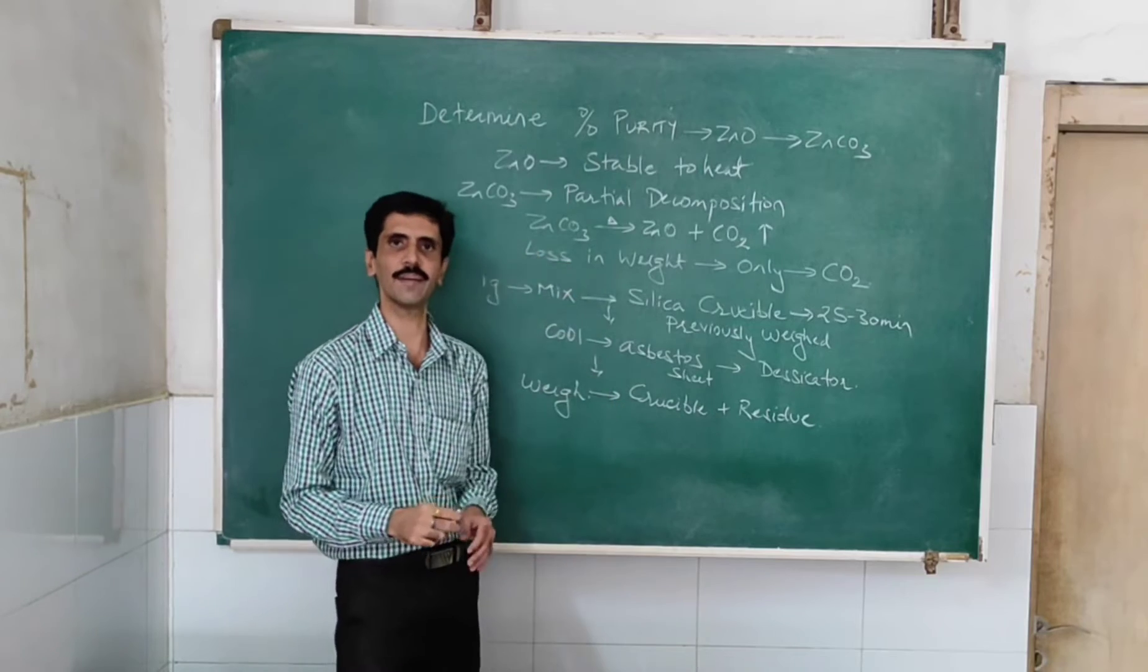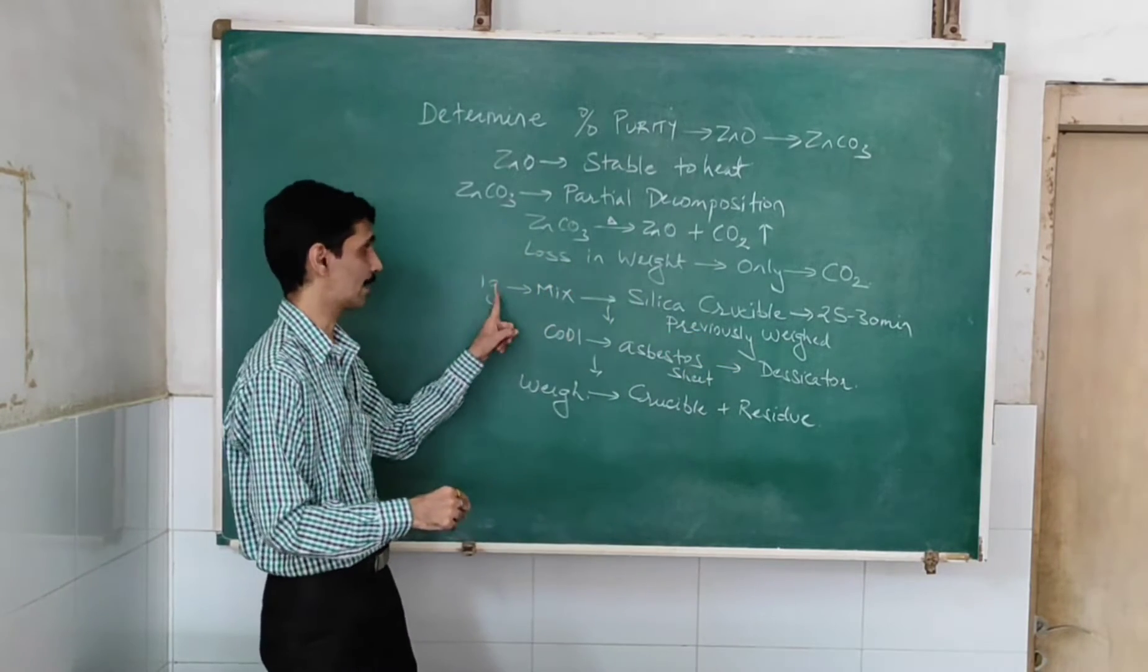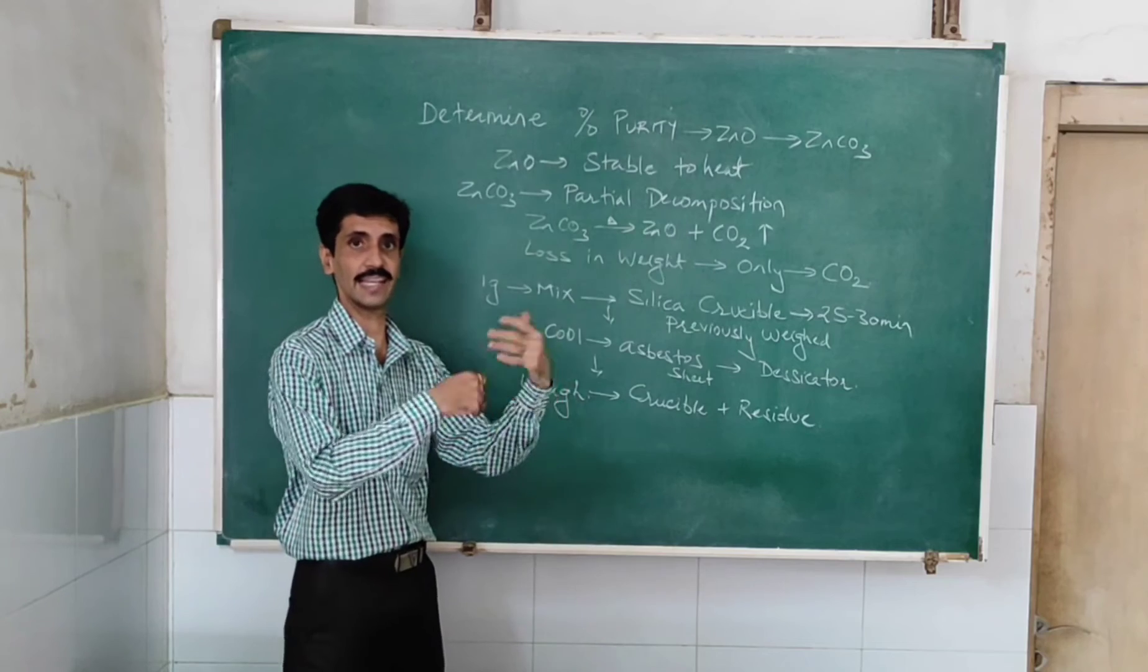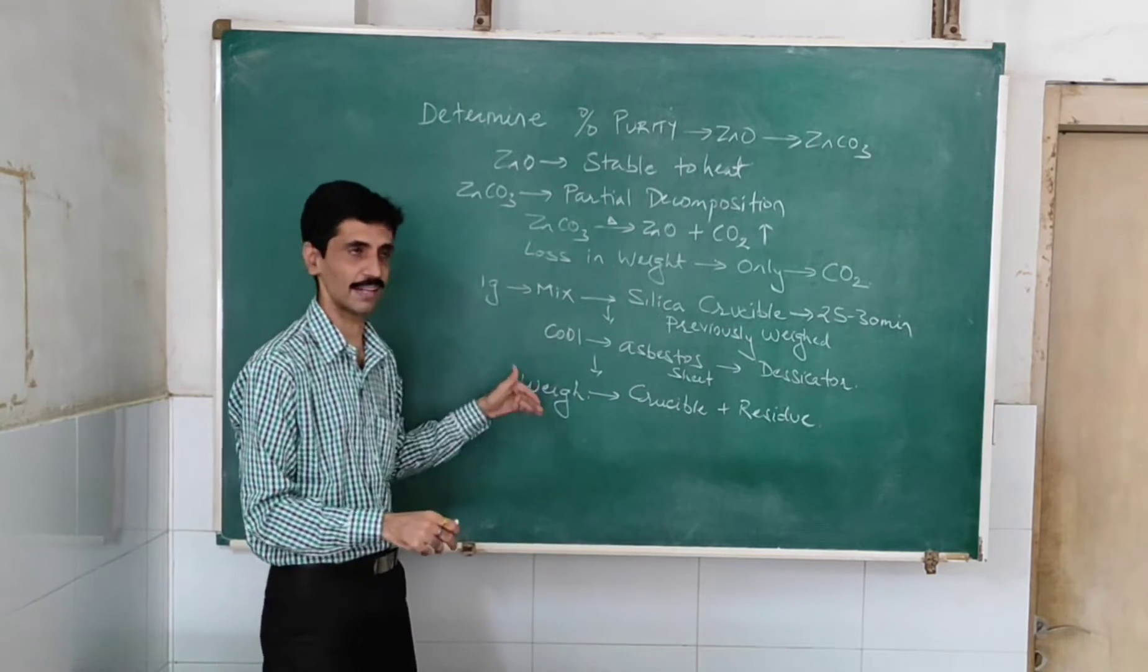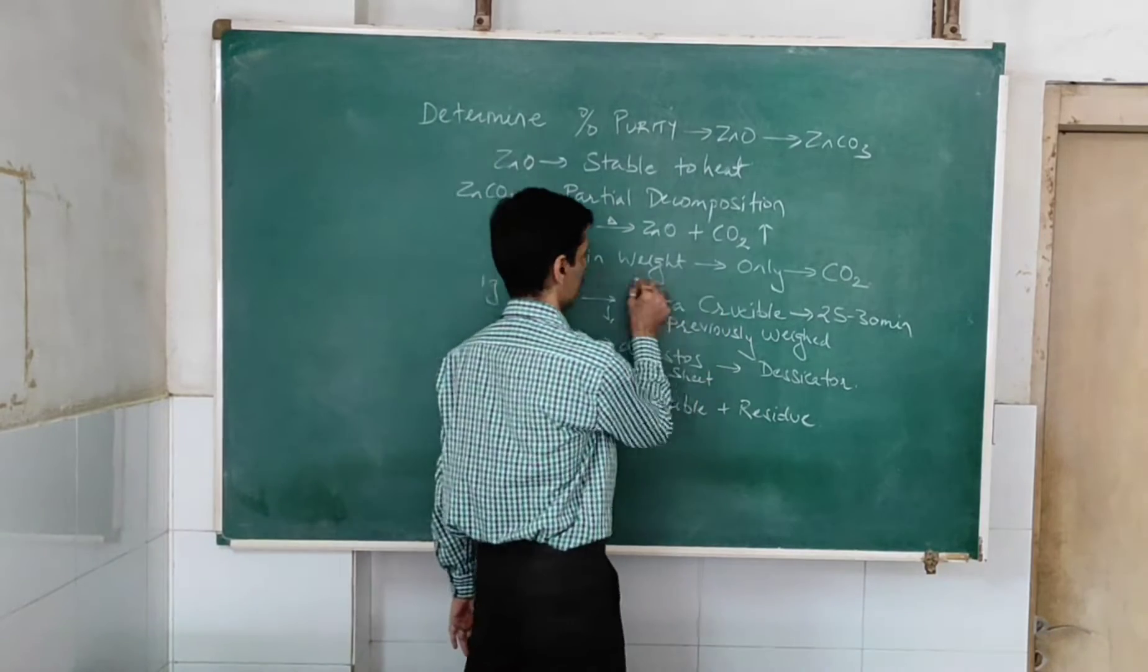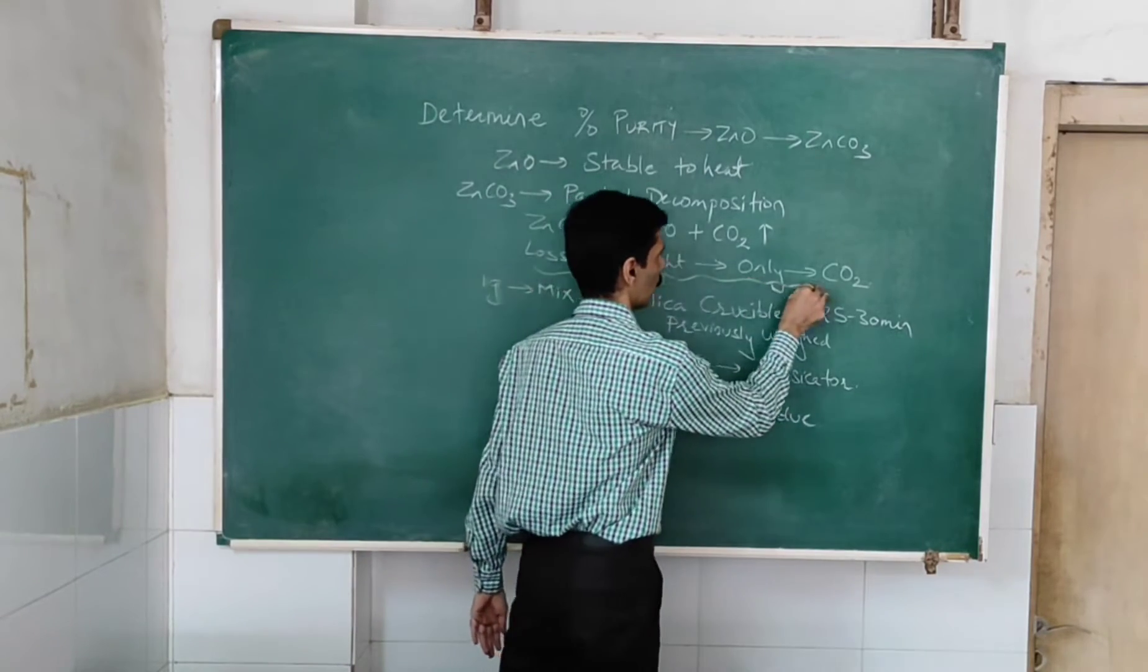So initially, I have the weight of crucible as well as the one gram of the mixture. And then, I heat it, cool it, and after that I am going to take the weight. So obviously, there will be a loss in weight. That loss in weight is only due to carbon dioxide.